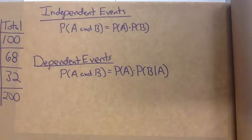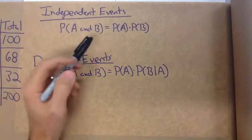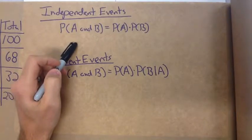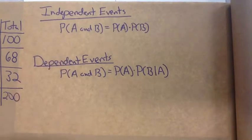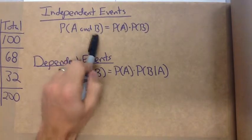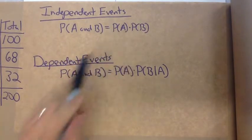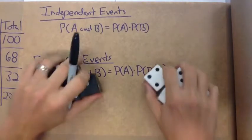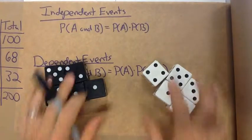We're looking at independent and dependent events, and we're going to identify the difference between the two and then start to solve the different probabilities with them. Independent events - the occurrence of one event has no effect on the probability of the other. So if we had a probability of A and B occurring, we can multiply the probabilities together.